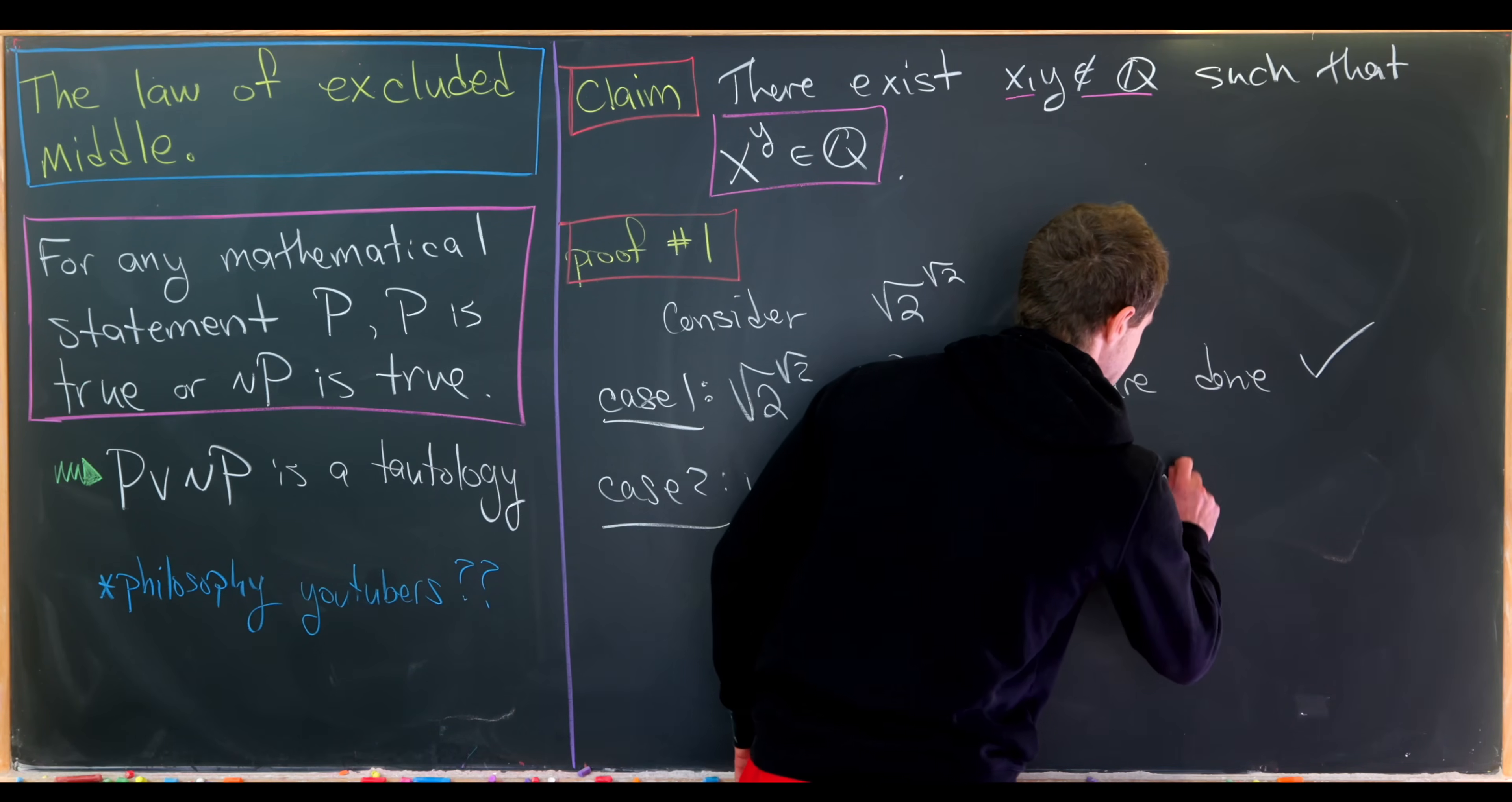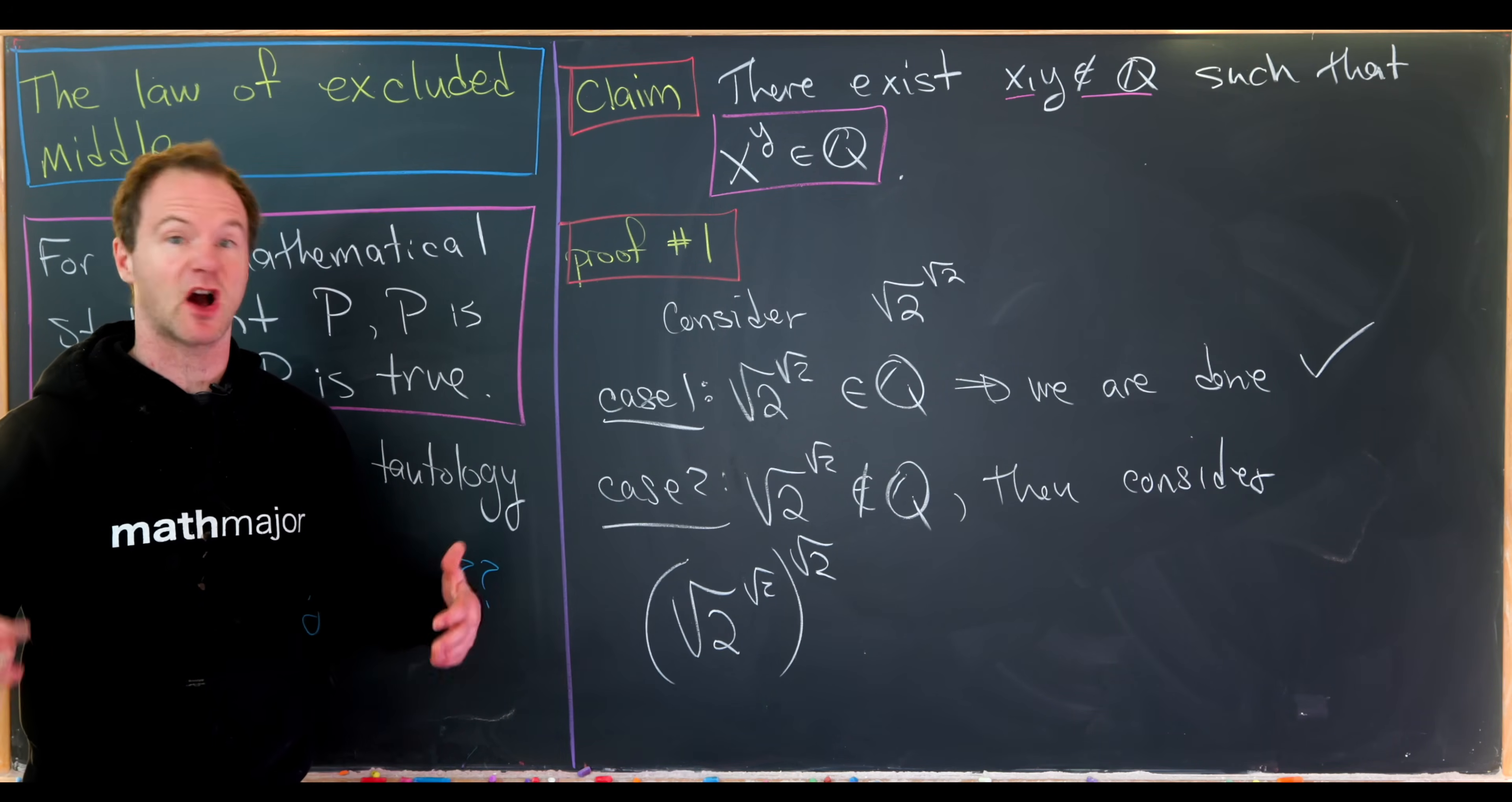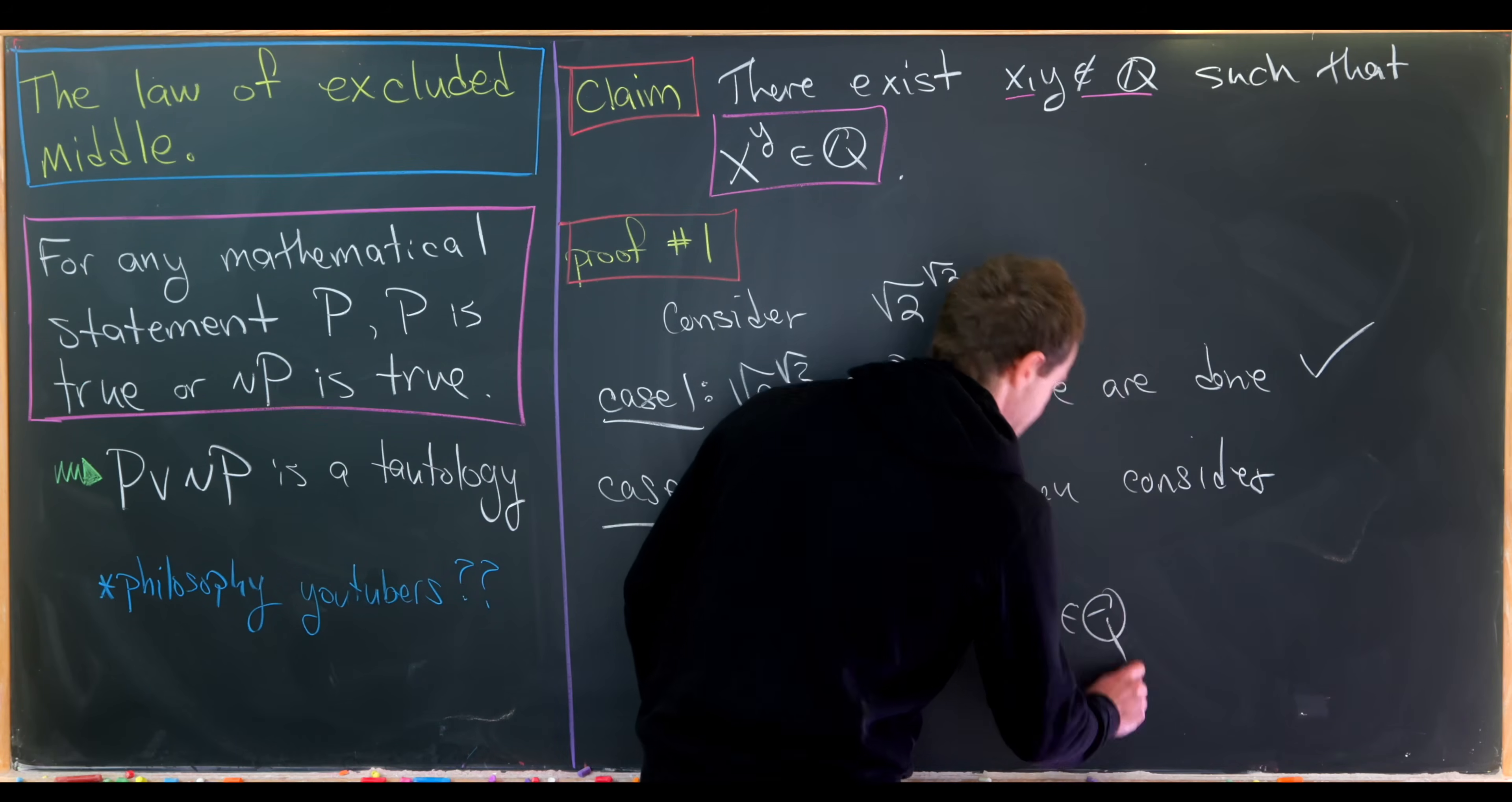Then we consider the following object, the square root of 2 to the square root of 2, all raised to the square root of 2. Now by our assumption, root 2 to the root 2 is irrational in this case. And then we know that root 2 is irrational by maybe common knowledge. We won't prove that here. We've proven numbers are irrational on the channel before. But now we can do exponent rules to see that this is the square root of 2 squared because we have root 2 times root 2 in the exponent. But then the square root of 2 squared is exactly 2, which is rational.